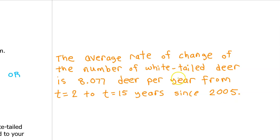Many students prefer to say it this way because it flows so directly from Part 1. In Part 1, we found that the average rate of change of the number of white-tailed deer was 8.077 deer per year. So for the interpretation, we can simply say that and then add on the time interval. And that's it.